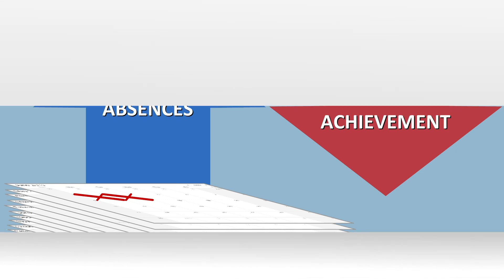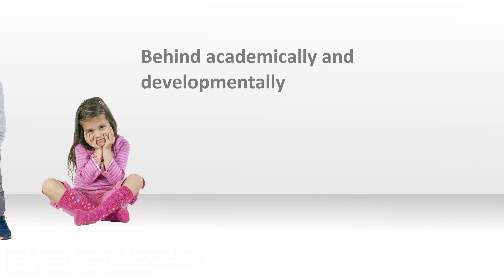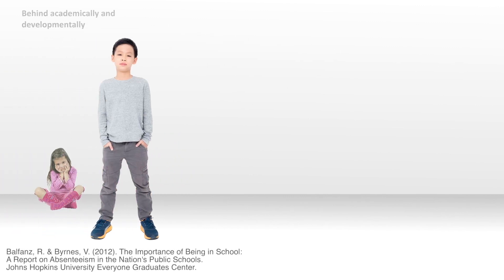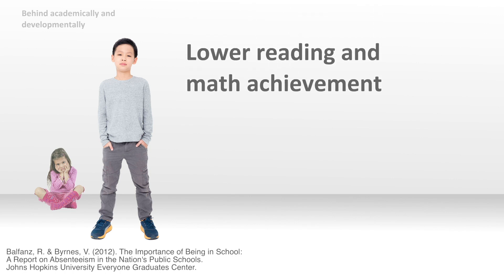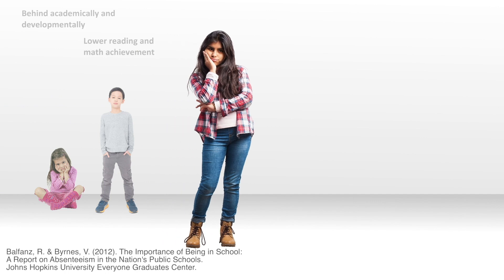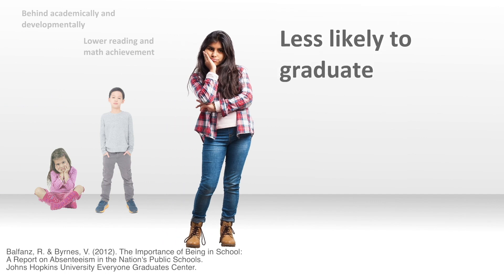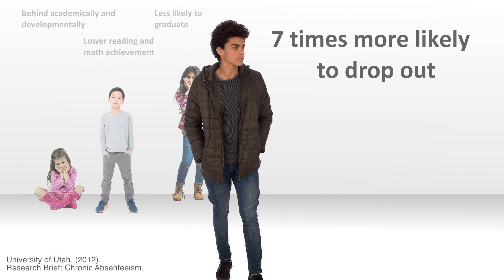For example, chronically absent preschool and kindergarten students are academically and developmentally behind their classmates who attend school regularly. By third grade, chronically absent students have lower reading and math achievement, signaling academic problems ahead. Being chronically absent in sixth grade raises the likelihood of not graduating from high school, and students are seven times more likely to drop out if they are chronically absent even just one year between eighth and twelfth grade.